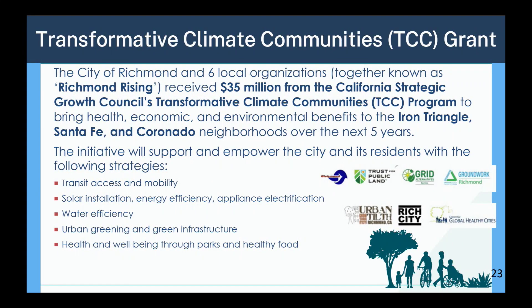The other larger grant is about $35 million — a transformative climate communities grant. Richmond received about $35 million from the state to invest in the neighborhoods of Iron Triangle, Santa Fe, and Coronado to improve economic and climate-related conditions. Various initiatives include transit access and mobility, solar installation, energy efficiency, appliance electrification, water efficiency, urban greening and green infrastructure, and health and well-being through parks and healthy foods.